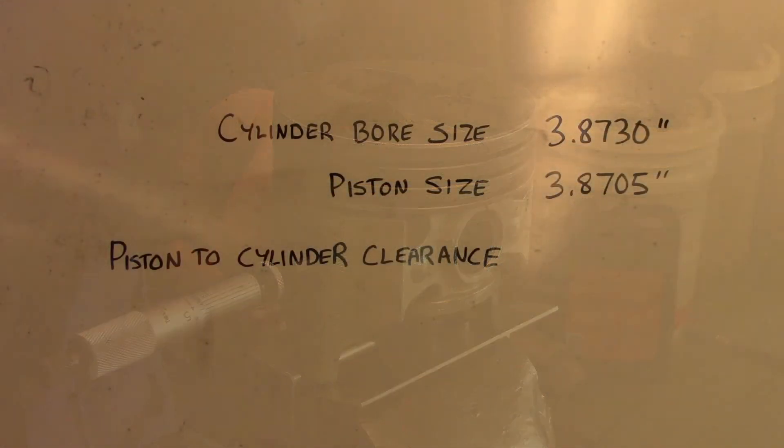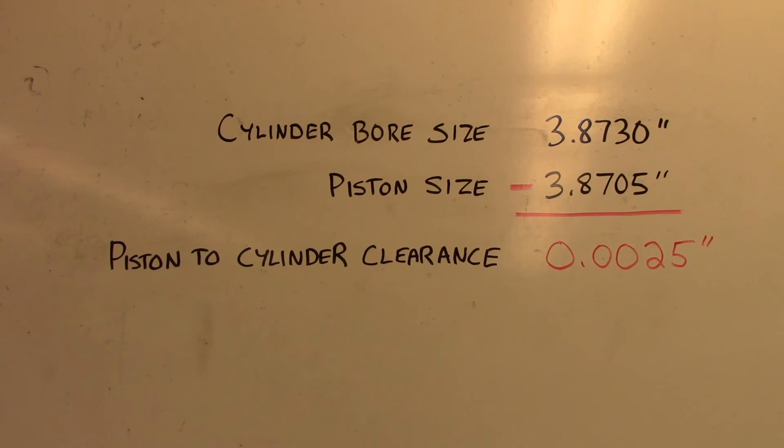Finally, to calculate piston to cylinder wall clearance, we must take our bore size of 3.8730 inches and subtract the piston size of 3.8705 inches. This gives us a piston to cylinder wall clearance of 0.0025 inches.